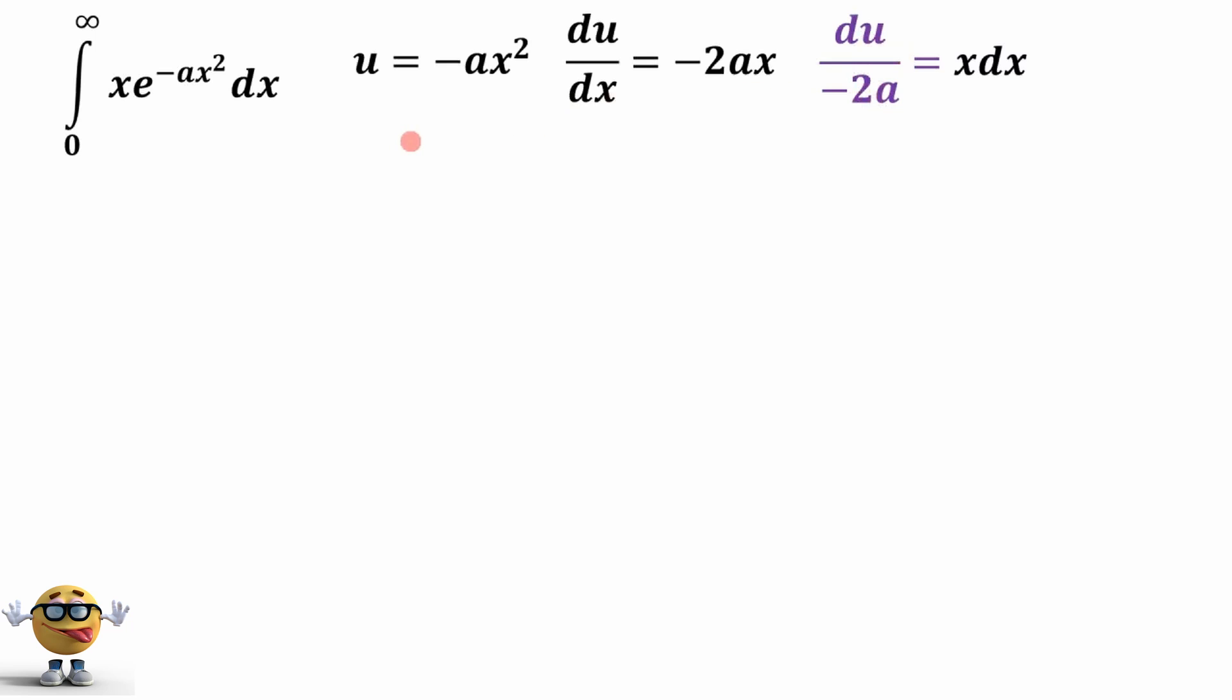Before we substitute it in, we've got to change our limits of integration. x goes from 0 to infinity. That means when x is 0, u is 0. And as x goes to infinity, u goes to negative infinity, because we have this negative sign here.